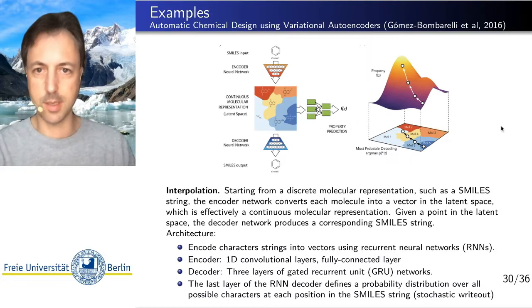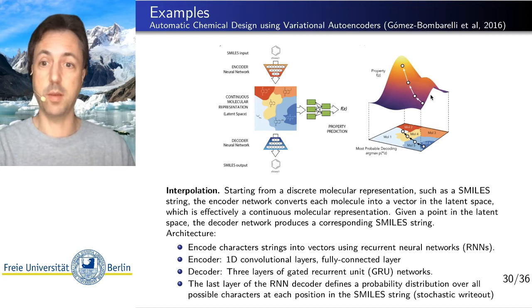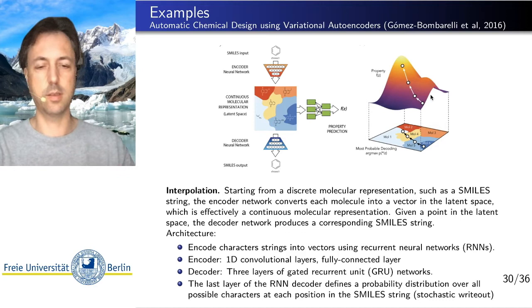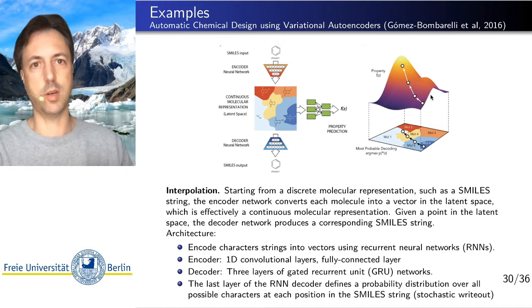And the last example that I want to discuss is an example from the molecular world. So this is work of Alanas Buru-Rutzig and Rafal Gromas-Bombarelli. A very nice paper where they basically use a variational autoencoder in order to encode chemical space. So we have a database of molecules and those are defined just by the chemical structure. So which atoms are in the molecule and how are they connected.